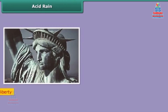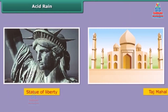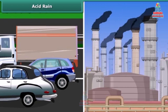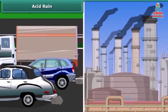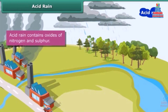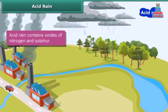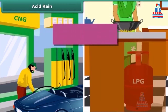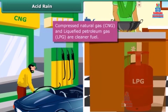These are images of the Statue of Liberty in New York and the Taj Mahal in Agra — both badly damaged due to acid rain. Industries and vehicles release toxic gases like sulfur dioxide and nitric oxide into the atmosphere. These gases react with water vapors to form sulfuric acid and nitric acid, which fall as acid rain. Use of clean fuels like compressed natural gas, CNG, and liquefied petroleum gas, LPG, can reduce the acidity of rain.